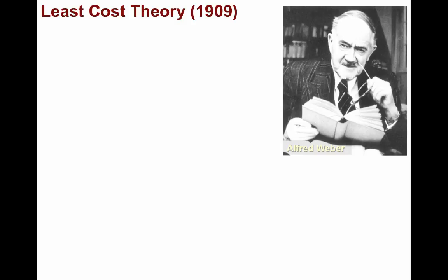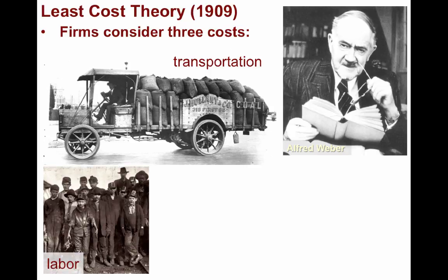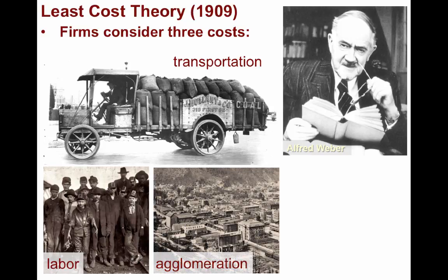And it's for this reason we pronounce it Weber. He devised his model of industrial location, emphasizing that firms consider three essential costs. The primary cost they sought to minimize was transportation. According to Weber, this was the most important factor, since at that time it was the most expensive. A second consideration was to reduce the cost of labor.